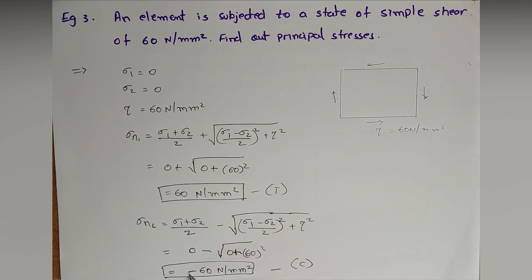So here our answer will be negative because of this sign: minus 60 Newton per mm square. Sigma two, minor principal stress, is minus 60 Newton per mm square. This is compressive because it is opposite to that of the major principal stress.